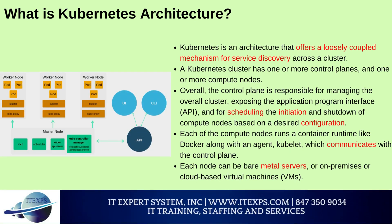What is Kubernetes architecture? Kubernetes is an architecture that offers a loosely coupled mechanism for service discovery across a cluster. A Kubernetes cluster has one or more control planes and one or more compute nodes. The control plane is responsible for managing the overall cluster, exposing the API, and scheduling the initiation and shutdown of compute nodes. Each compute node runs a container runtime like Docker along with a Kubelet agent that communicates with the control plane. Each node can be a bare metal server, on-premises, or a cloud-based virtual machine.